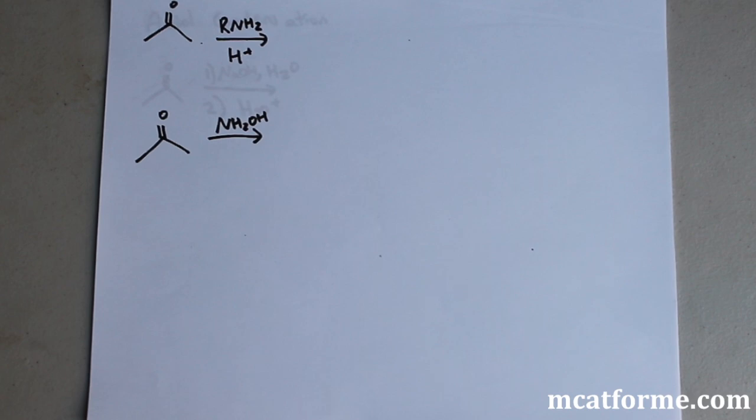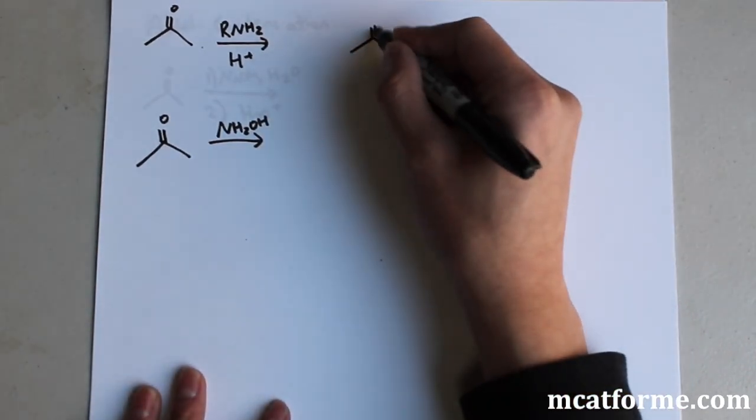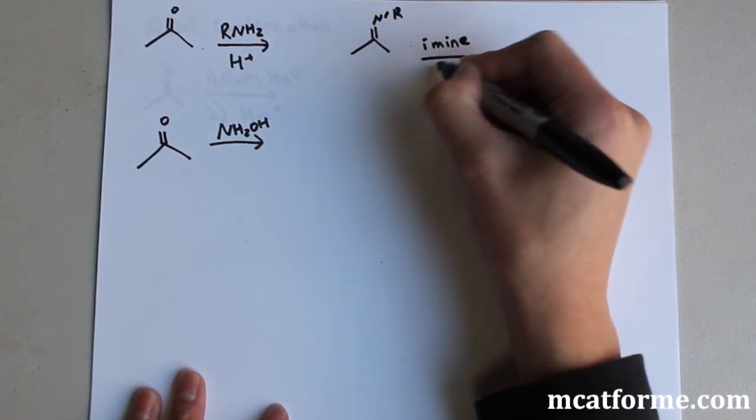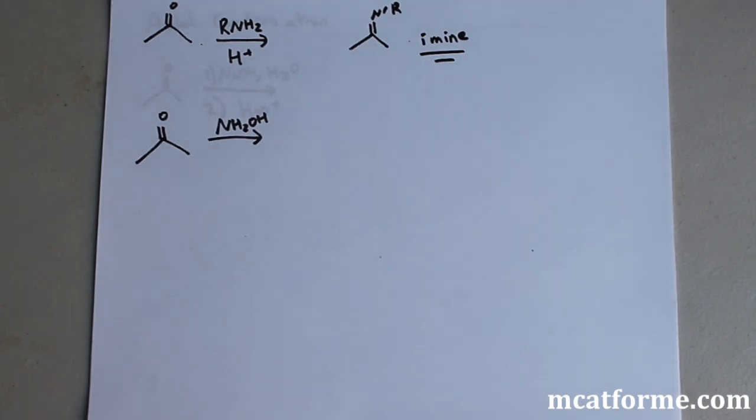Next up we're going to be looking at reacting amines with ketones. And so what we're going to create is something called an imine. Okay, so that's an important name to know. You kind of have to distinguish between the amine, imine, and amide, so know how to draw all of those and just know this basic reaction.